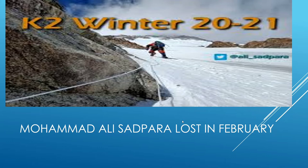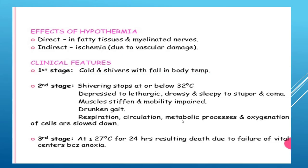At such extreme temperatures, a person cannot survive because freezing causes loss of vital centers in the brain, anoxia, and crystallization of body fluids, resulting in death. The direct effects of hypothermia involve fatty tissues and myelinated nerves; indirect effects involve ischemia due to vascular damage.